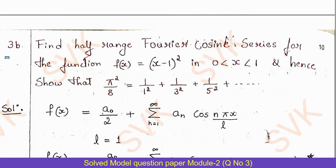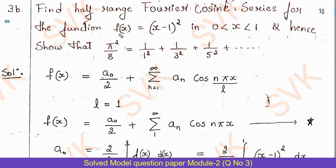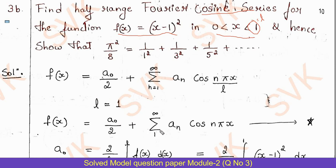Moving on to Question 3b: find the half-range Fourier cosine series for f(x) = (x - 1)² in the interval 0 to 1, and hence show that π²/8 = 1/1² + 1/3² + 1/5² + ⋯. The interval is 0 to 1, so l = 1. The half-range cosine series formula is f(x) = a₀/2 + Σ aₙ cos(nπx/l). With l = 1: f(x) = a₀/2 + Σ aₙ cos(nπx). Call this equation (★).